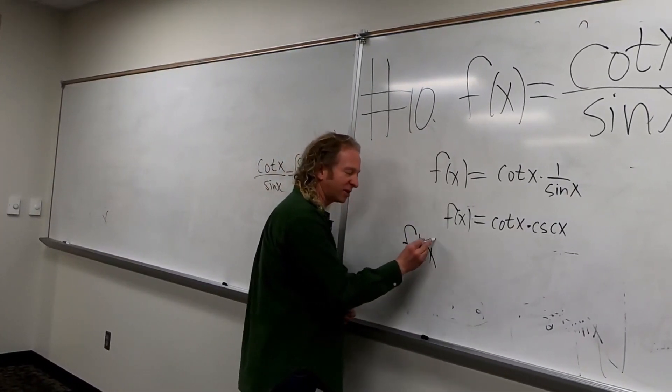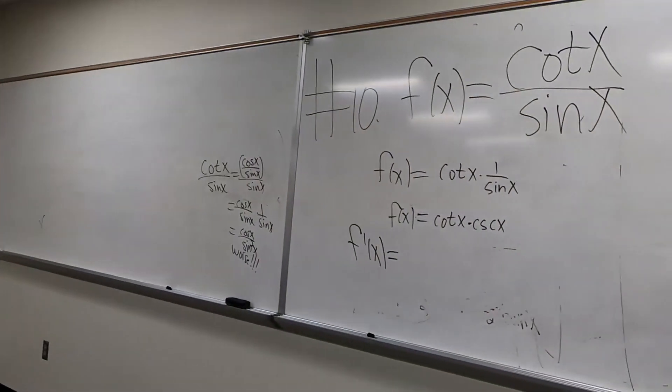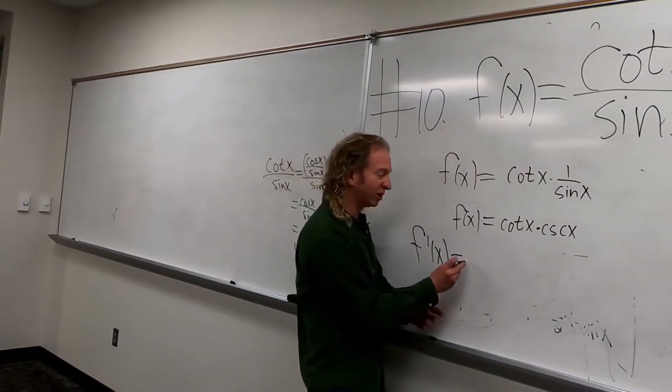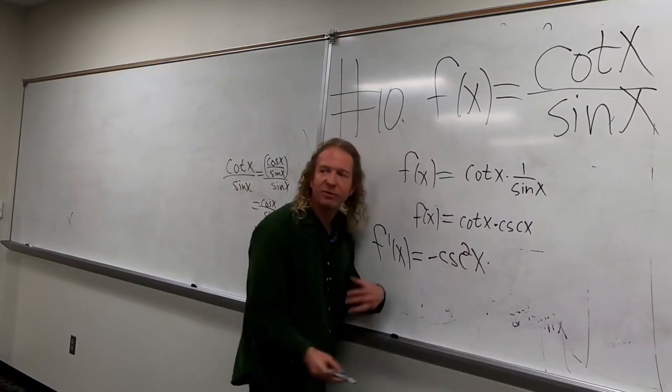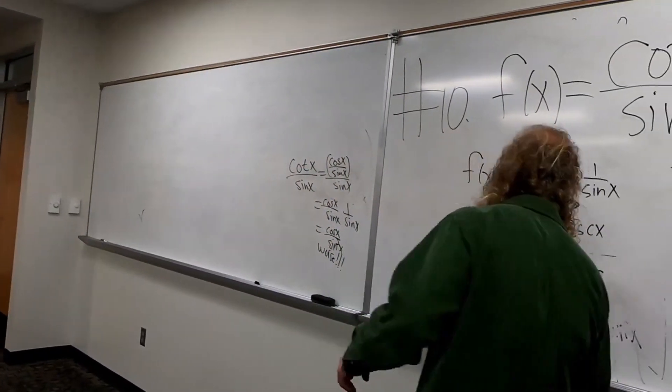So it's the derivative of the first times the second. So what's the derivative of cotangent X? Do you all remember? Negative cosecant squared X. Very good. Oh, this is going to give us a really pretty solution. So it's the derivative of the first times the second, which is cosecant X. Okay, we're going to get a cosecant cube.